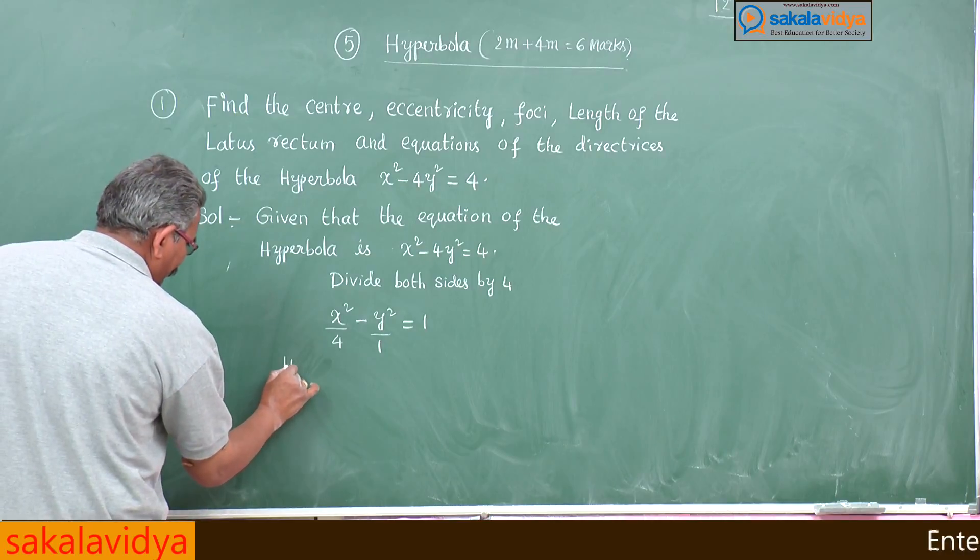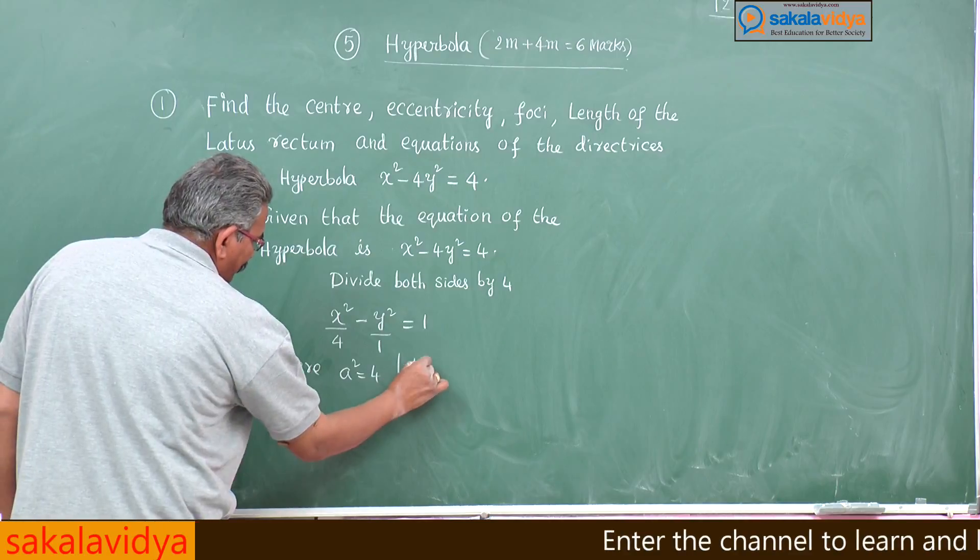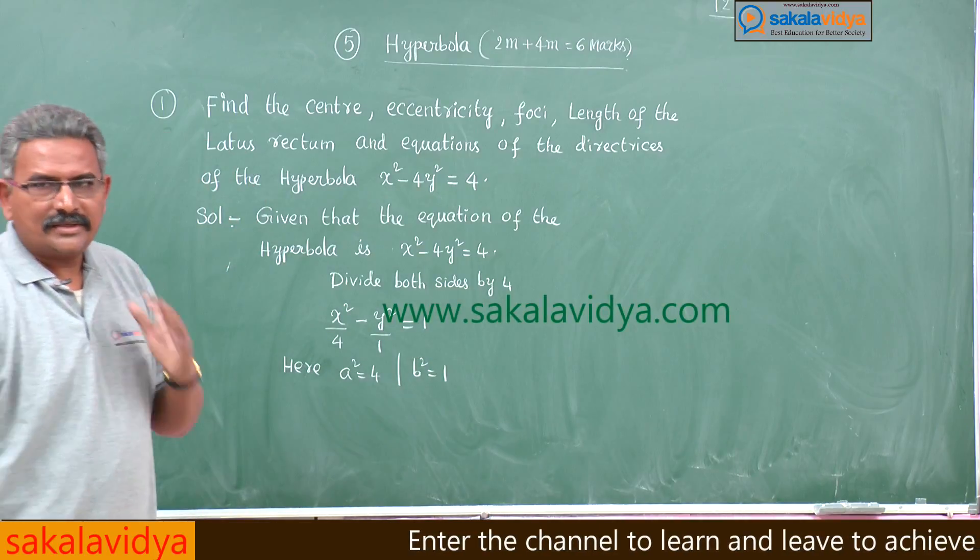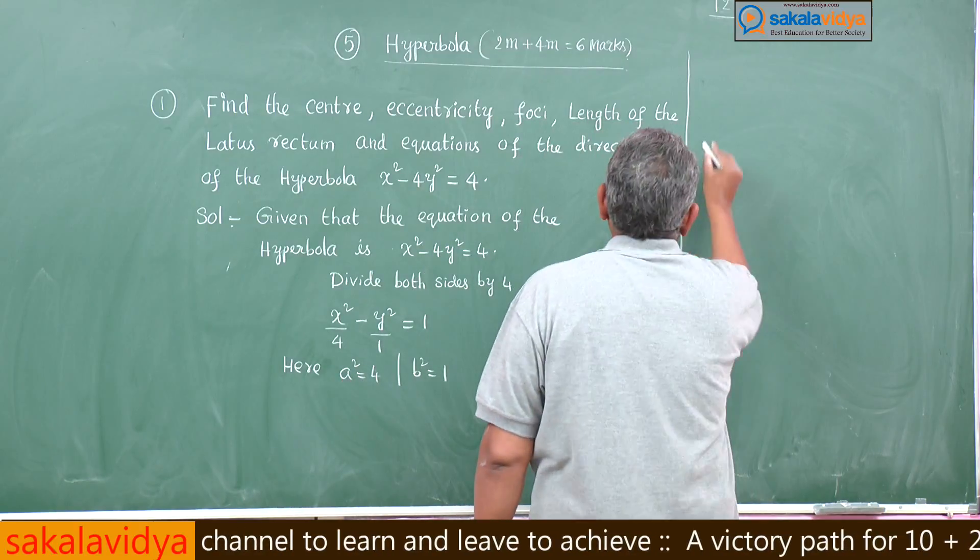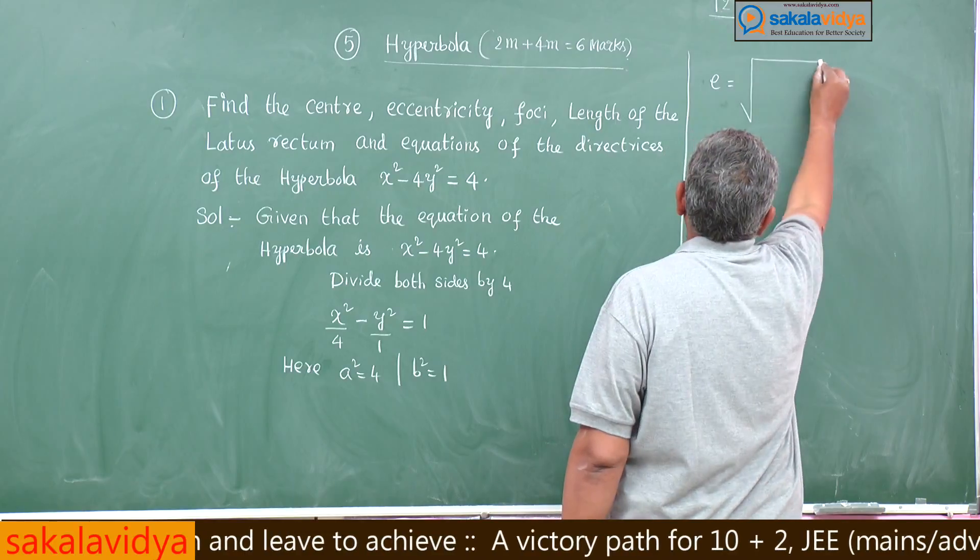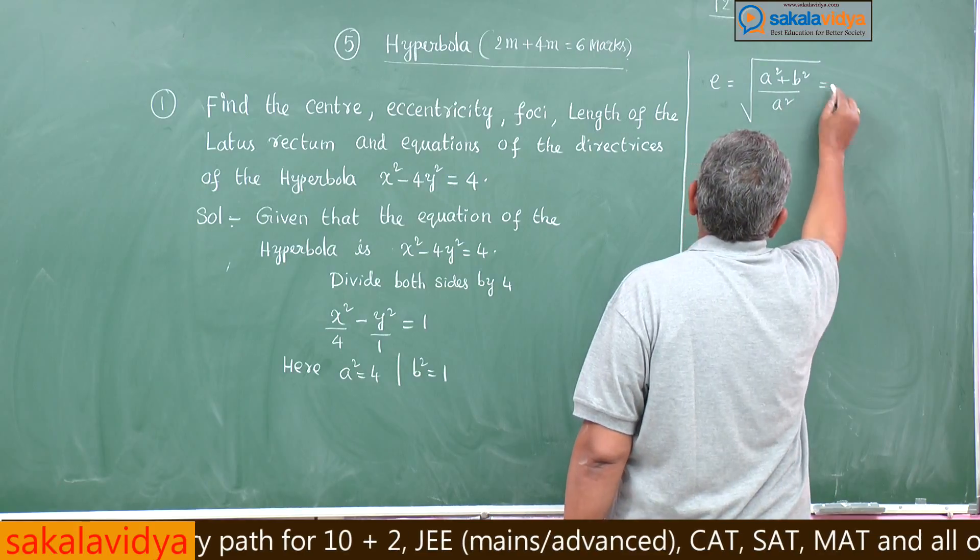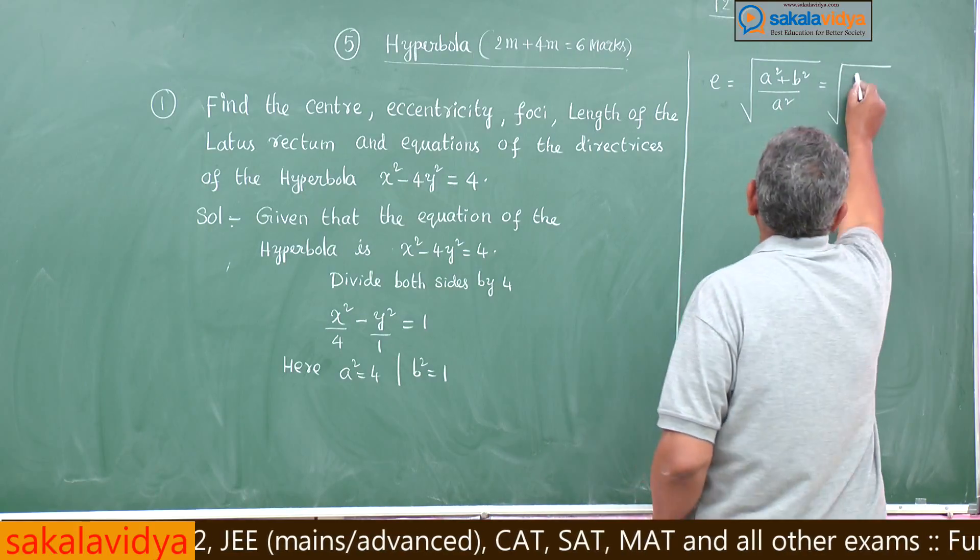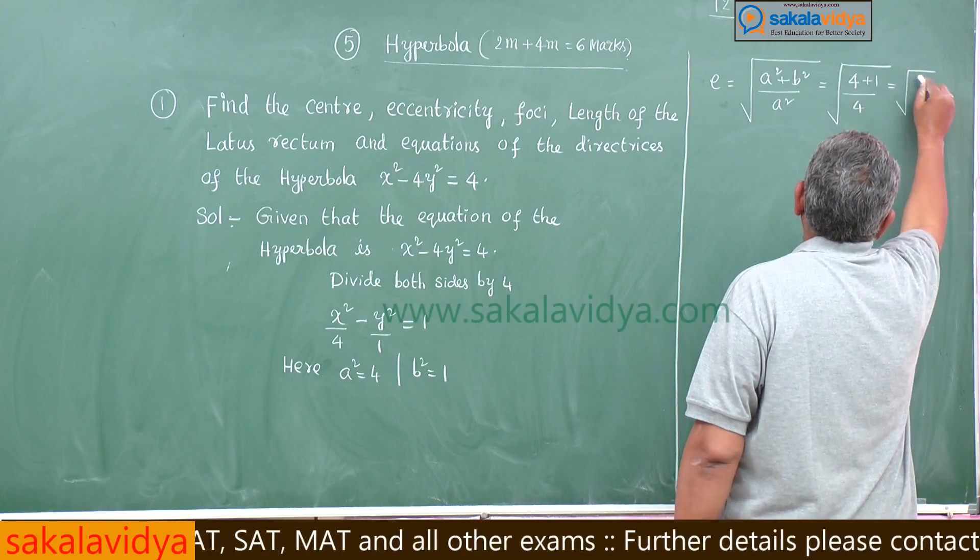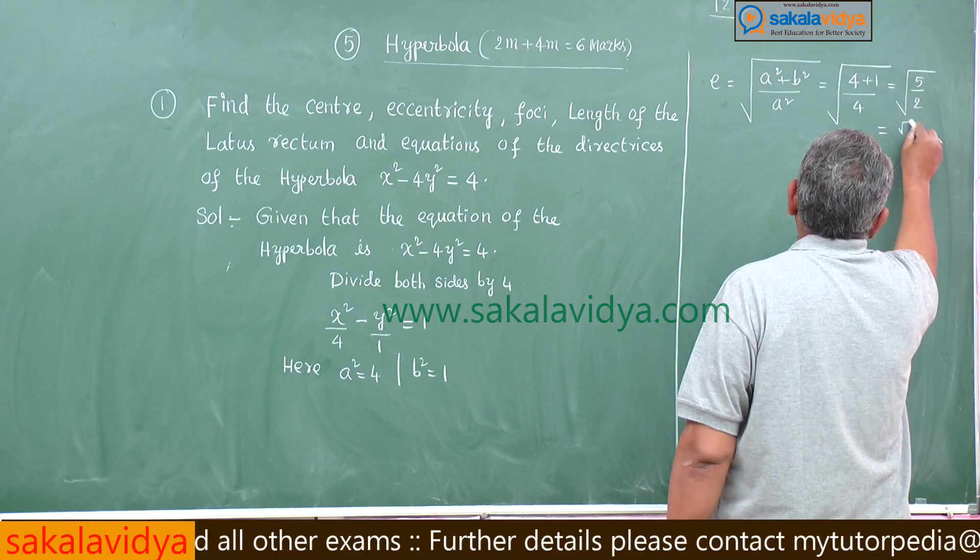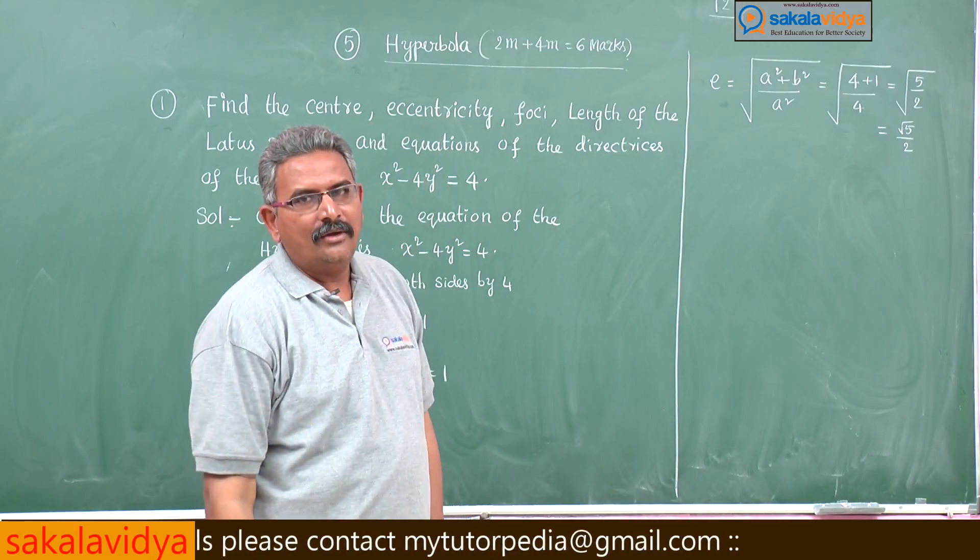Here a square is equal to 4 and b square is equal to 1. First let us find out the E value. E is equal to root of a square plus b square by a square. Root of 4 plus 1 by 4, this is root 5 by 2. Just we have to check whether it is greater than 1 or not, yes, greater than 1.